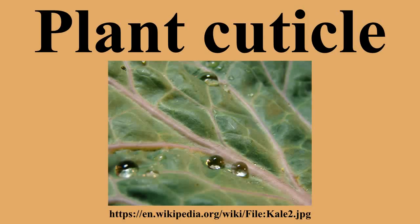The cuticle is composed of an insoluble cuticular membrane impregnated by and covered with soluble waxes. Cutin, a polyester polymer composed of interesterified omega-hydroxy acids which are cross-linked by ester and epoxide bonds, is the best known structural component of the cuticular membrane. The cuticle can also contain a non-saponifiable hydrocarbon polymer known as cutan. The cuticular membrane is impregnated with cuticular waxes and covered with epicuticular waxes, which are mixtures of hydrophobic aliphatic compounds and hydrocarbons with chain lengths typically in the range C16 to C36.